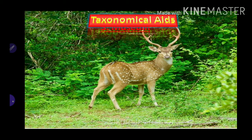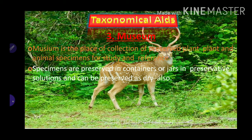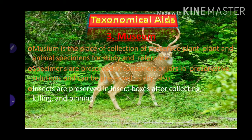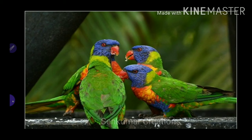Museum: specimens are preserved in containers or jars in preservative solutions, and can also be preserved dry. Insects are preserved in insect boxes after collecting, killing, and pinning them. Large animals are stuffed and preserved.